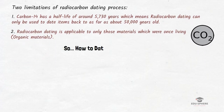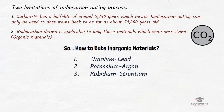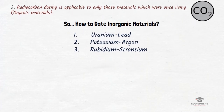In order to date inorganic substances such as metals and rocks, three types of dating methods are commonly used: uranium-lead, potassium-argon, and rubidium-strontium. The core concept behind all these methods is the same — elements undergo radioactive decay, and the decay process has a fixed half-life.